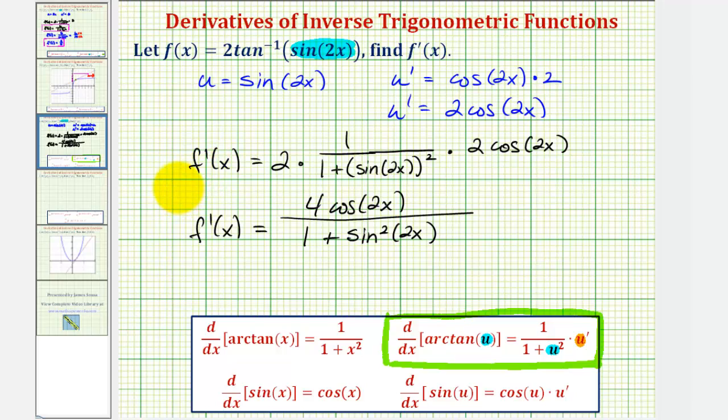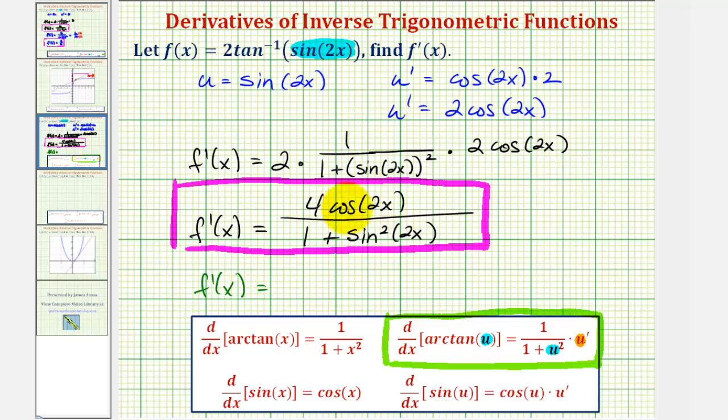So while this is our derivative function, to type this into our online homework, we'd enter f prime of x equals, we'd have a set of parentheses for the numerator, so we'd have four cosine two x, so there's a numerator, divided by our denominator in parentheses, one plus, and then for sine squared two x, we need to enter sine two x squared, and then we have another closed parenthesis for our denominator.